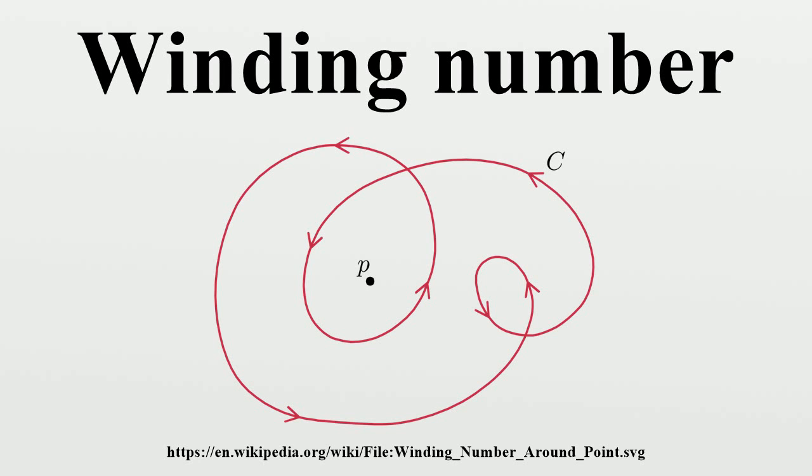This defines the winding number of a curve around the origin in the x-y plane. By translating the coordinate system, we can extend this definition to include winding numbers around any point p.